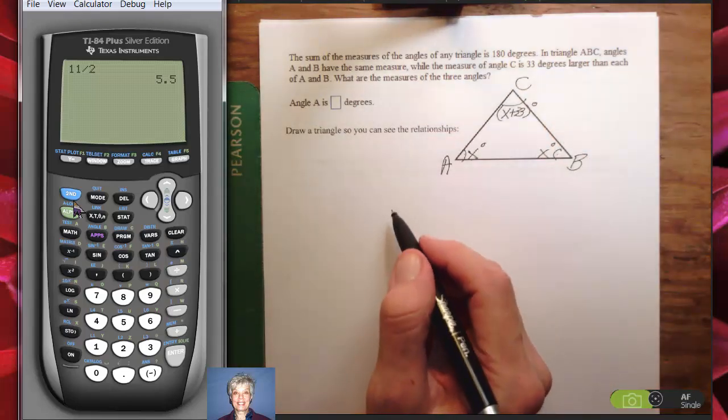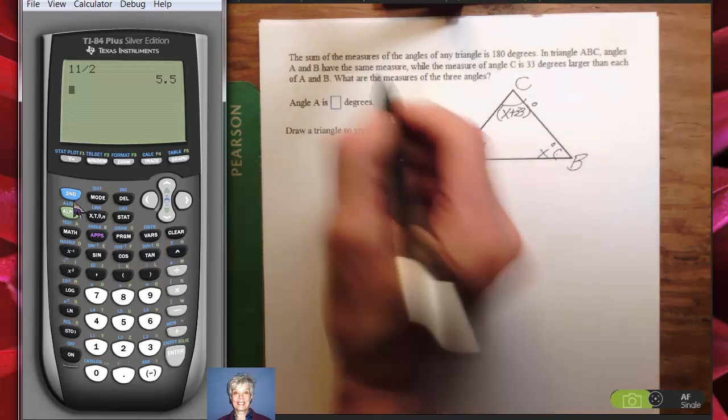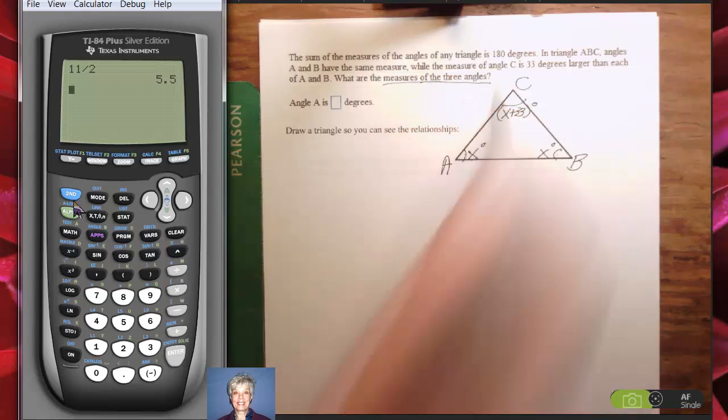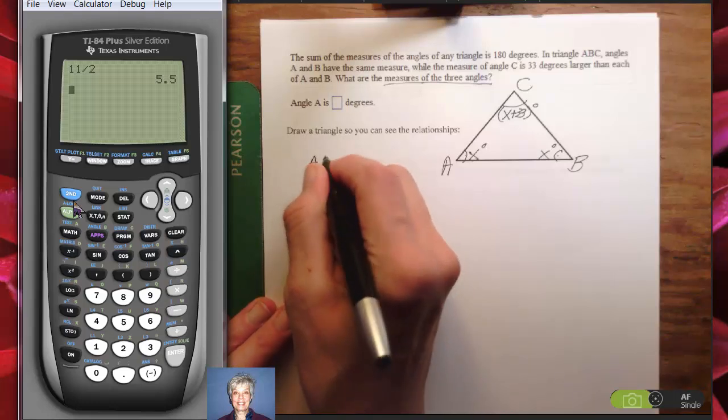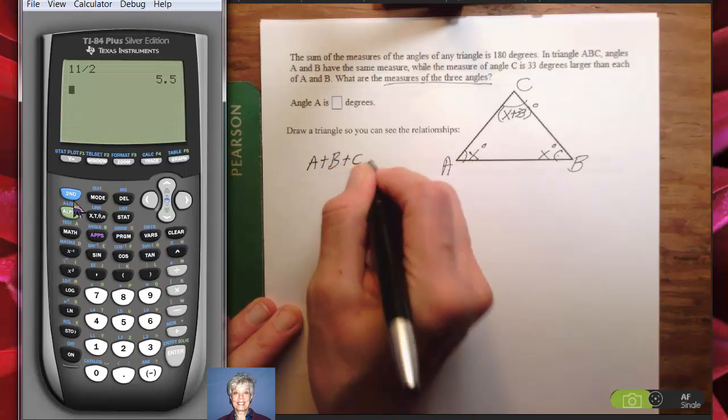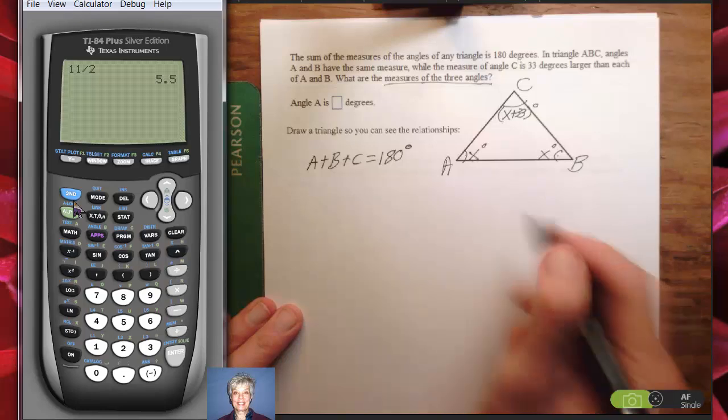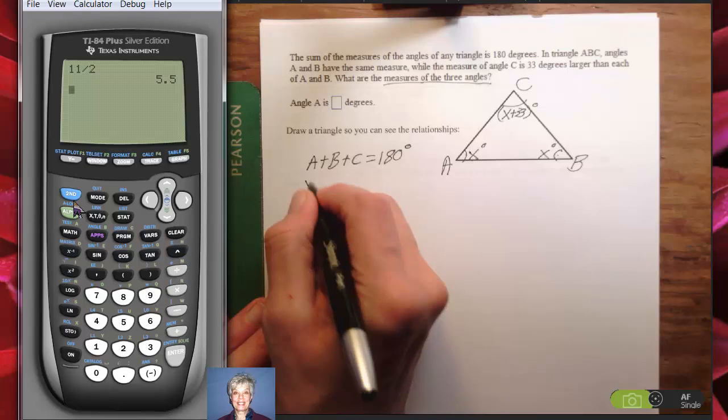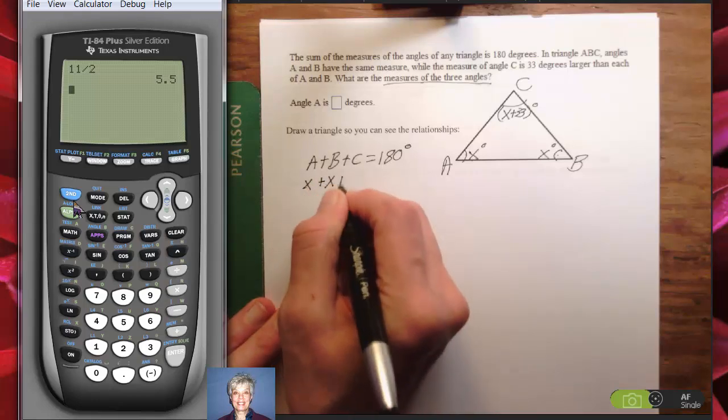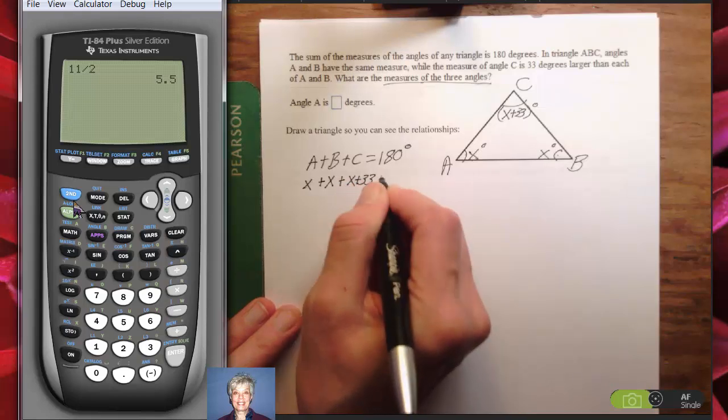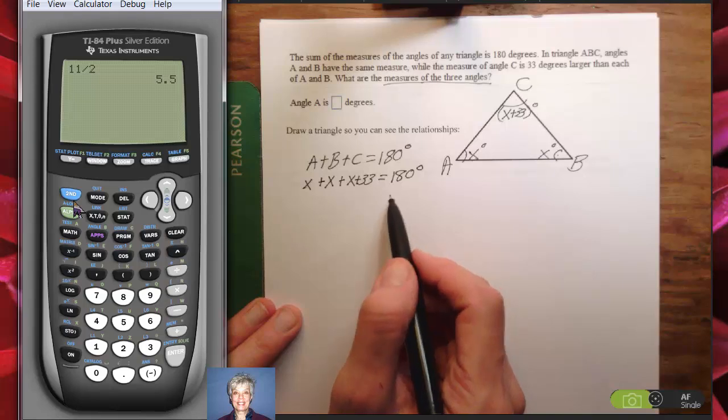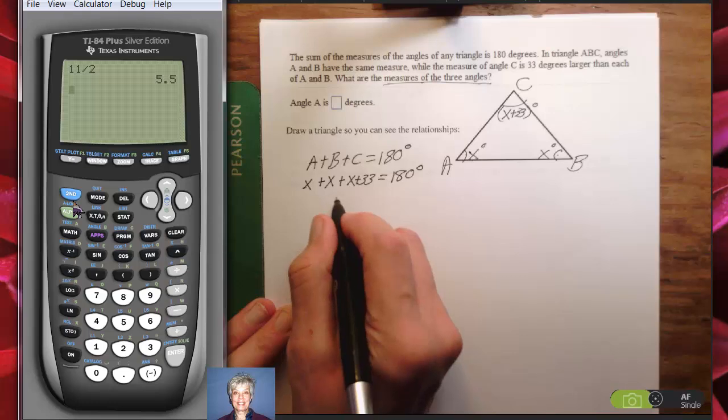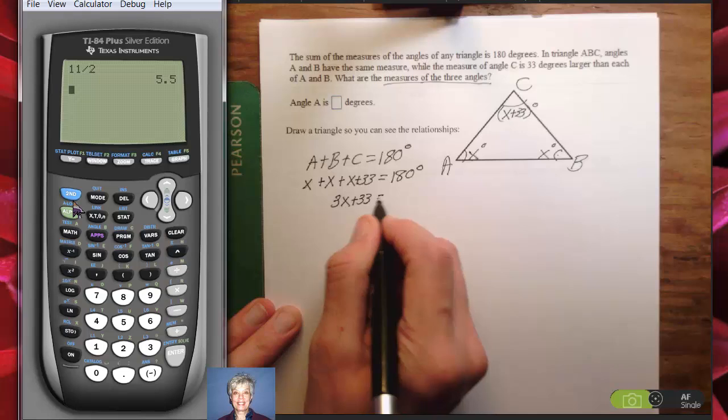What do we know? We're being asked, what are the measures of the three angles? Since this is asking for the three angles, I'm going to give all three angles. I know that angle A plus angle B plus angle C equal 180 degrees. I'm going to substitute the values that I wrote in here. Angle A is x degrees, angle B is x degrees, and angle C is x plus 33 degrees, and they add up to 180 degrees. All you have to do is read through the problem step-by-step and you can get this information.